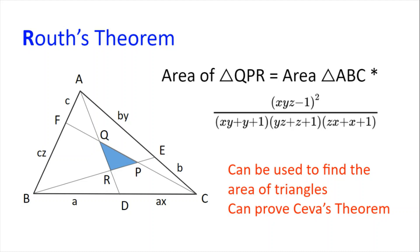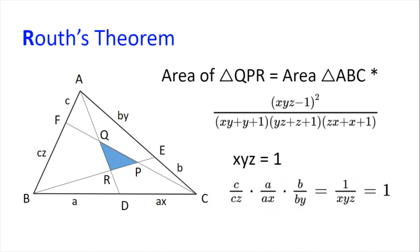We can use this result to show areas of triangles, but also to prove Ceva's theorem. If we have Ceva's theorem, then the area of PQR is 0. So (XYZ minus 1) squared divided by (XY plus Y plus 1)(YZ plus Z plus 1)(ZX plus X plus 1) equals 0, which means the numerator must be 0, and so XYZ must equal 1. If we look at AF/FB multiplied by BD/DC multiplied by CE/EA, we get C/CZ multiplied by A/AX multiplied by B/BY, which gives us 1/XYZ, which is 1. Hence, proving Ceva's theorem.